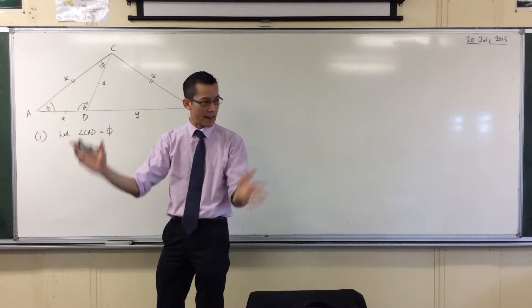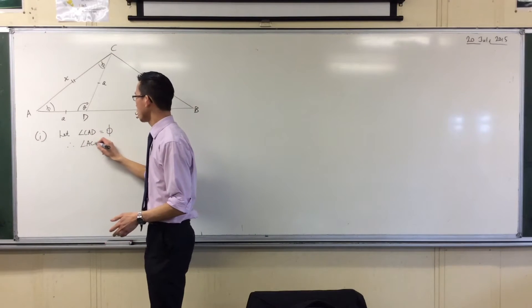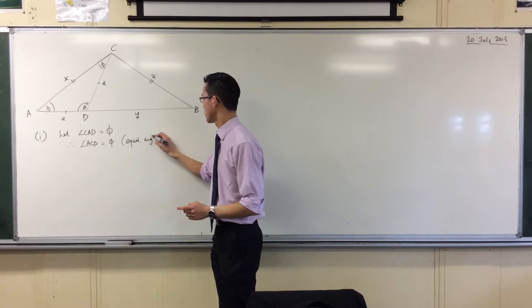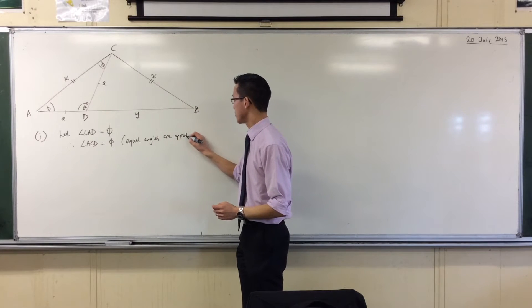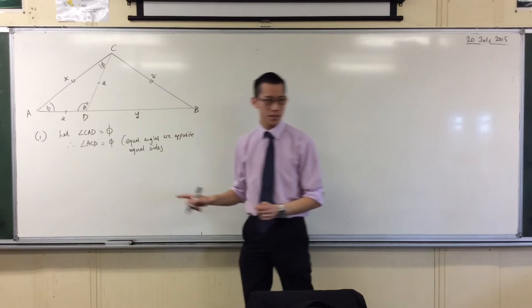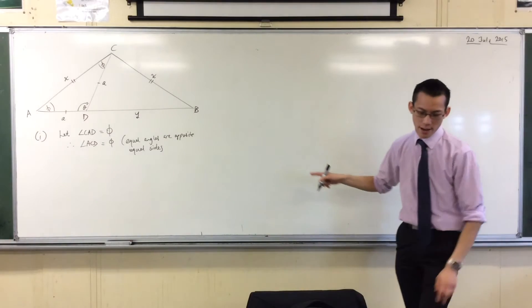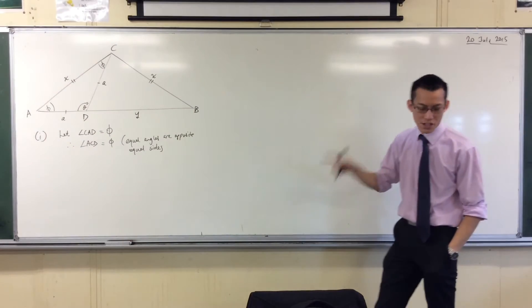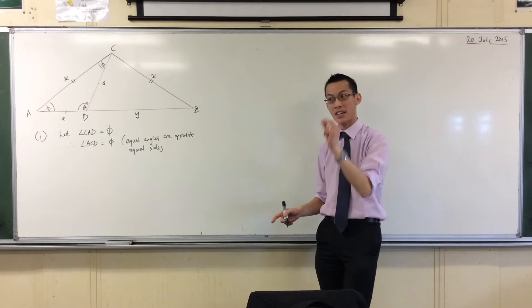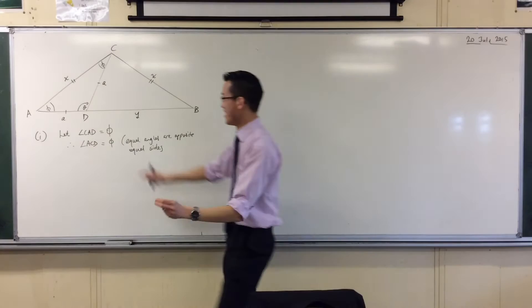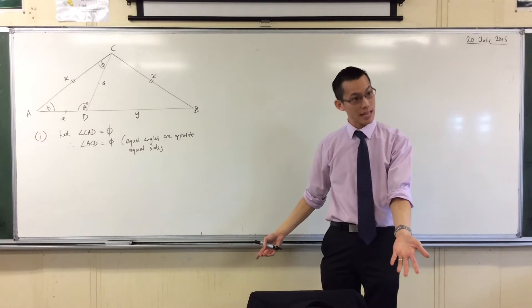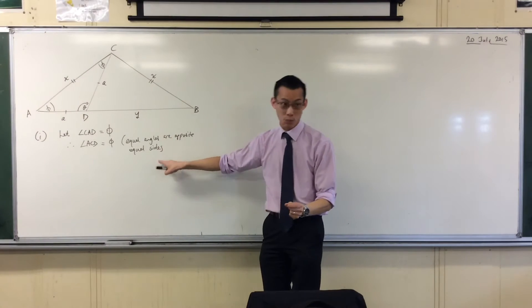Here's the way that I state it. You can talk about isosceles triangle if you like, but I will say ACD equals phi, and my reason is equal angles are opposite equal sides. Now, just before I finish this reason, the reason I'm saying it this way is because I know that ABC is isosceles because they've actually told me, but in the question, they haven't actually told me that ACD is isosceles. I can see that it is, but nowhere in the question does it actually state it. What the question does state is that there are equal sides.